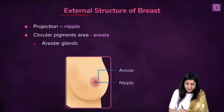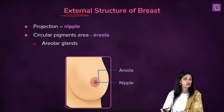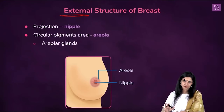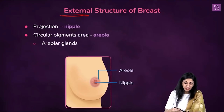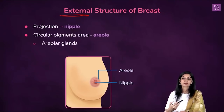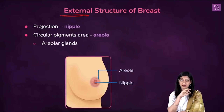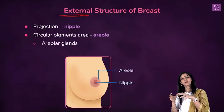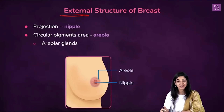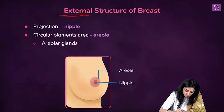Let's study the structure of the breast externally and then we'll see the function. Externally, there is a projection called the nipple. God has planned to give this projection called nipple so that a baby can suck on it, and that is how a baby develops the sucking reflex. Everything is planned — we just don't have the manual because when we are born there is no user manual attached to the baby. That is why we are studying this.